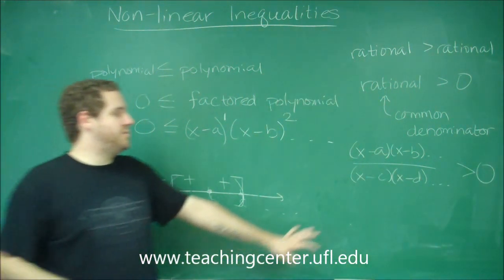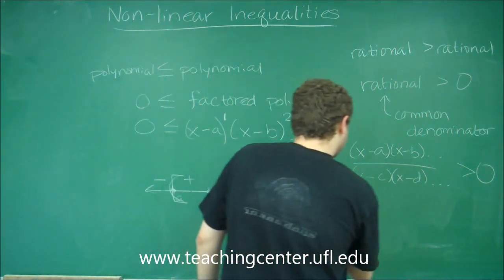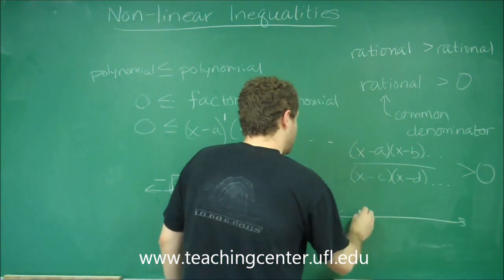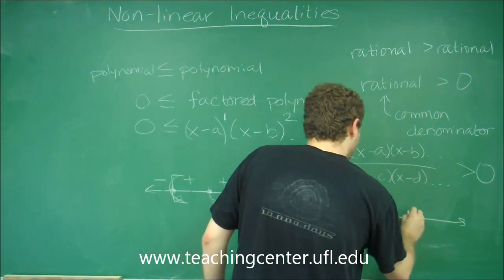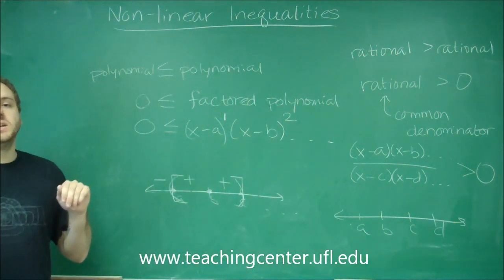So this is your rational function. You factor the top and the bottom, and then you essentially do the same thing. You set up the number line with a, b, c, d, etc., etc. And you're going to test points just like you did here.